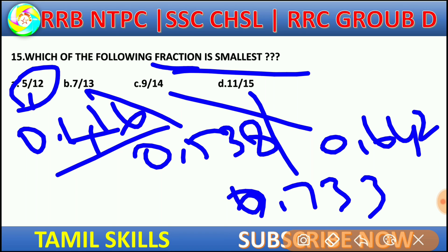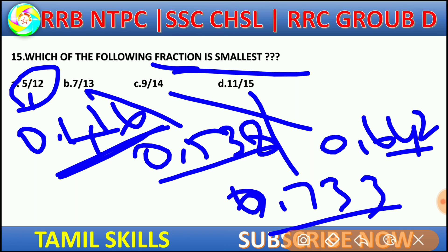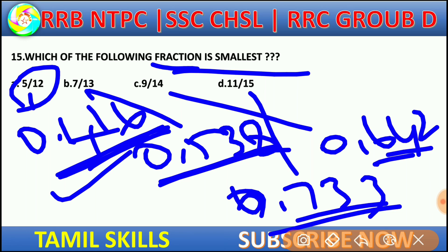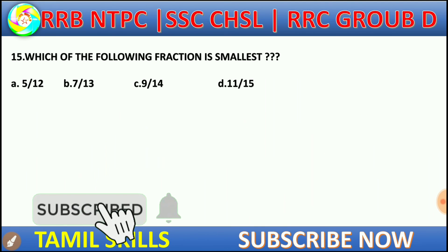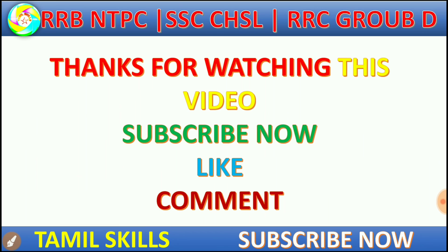So we need to convert fractions to decimals to compare them. We change all values, and that's the correct method to find the smallest. That's the right method — that's the best way to compare fractions.